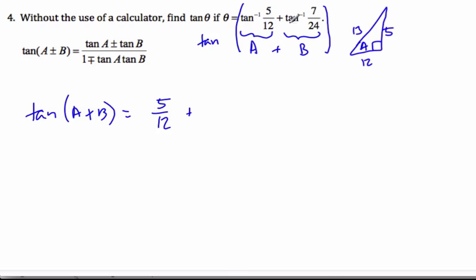Plus, which is this value here, tangent of B is 7 over 24. And here I'm going to go 1 minus 5 over 12 times 7 over 24.